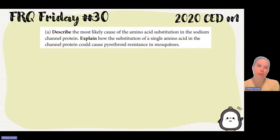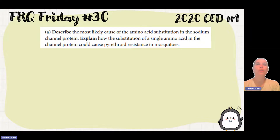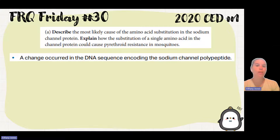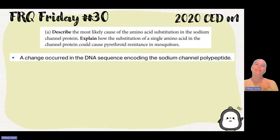The question asks: describe the most likely cause of the amino acid substitution in the sodium channel. How did we go from having one amino acid to having a different amino acid? That's just a change in your DNA — traditionally, this is a point mutation in which one nucleotide is changed. This would be considered a missense mutation because that one nucleotide change leads to a different amino acid being substituted.